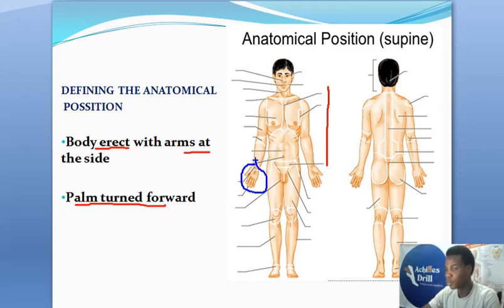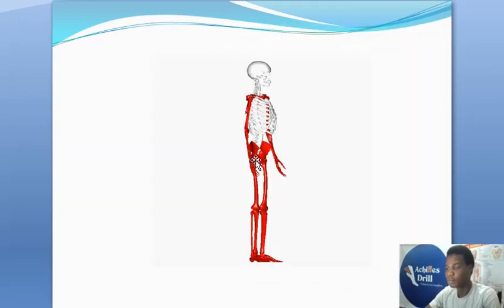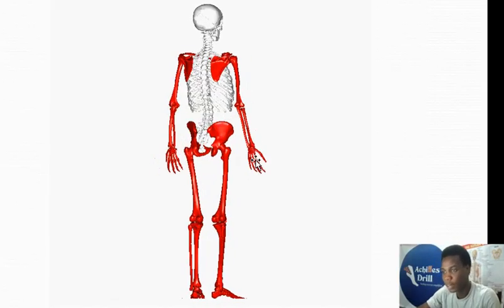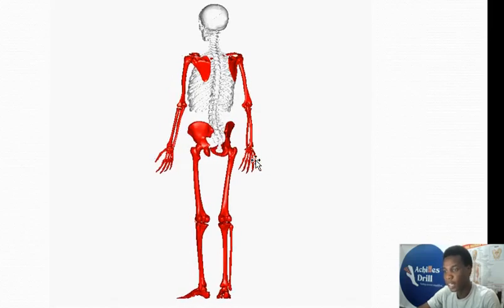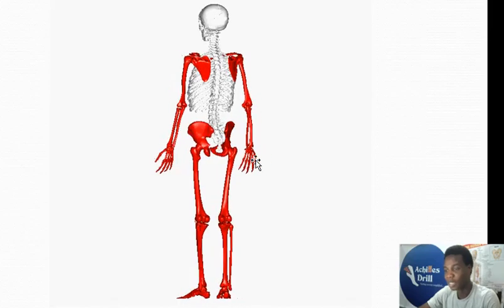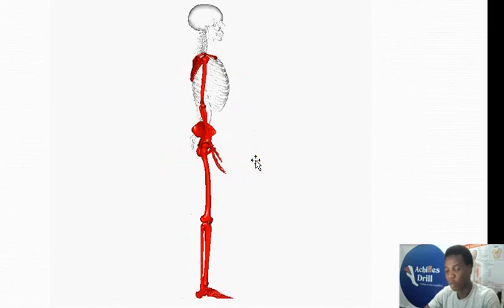Once you change this position, the structure you're studying won't be meaningful again. So this is the reference position we adopt in anatomy. Right here I have a GIF showing the anatomical position. The young man is standing erect, his arms are by his side, and the palm is turning forward.